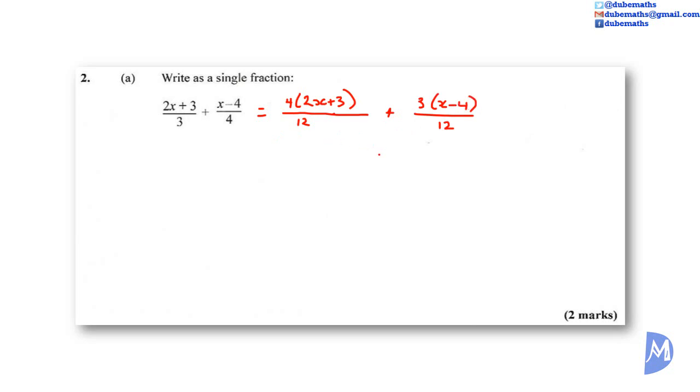Now that we have both fractions over the same denominator, we can simply add the numerators. Expand the brackets. 4 by 2x is equal to 8x. 4 by 3 is equal to 12, positive 12. Add it to 3 multiplied by x is 3x. 3 multiplied by negative 4 is negative 12. 8x plus 3x is equal to 11x. 12 subtract 12 is 0, all over 12. The answer is 11x over 12.